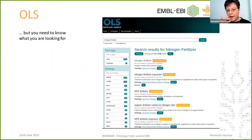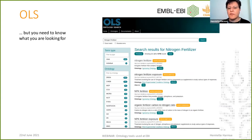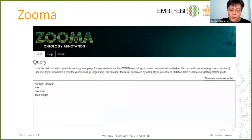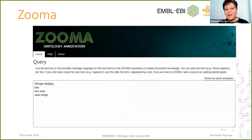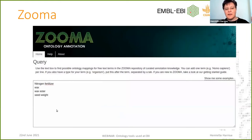When you look for something on OLS, you really need to know what you want to look at, because otherwise you can be overwhelmed by the amount of results returned. So what do you do if you're looking for a term but don't know which ontology to use? That is where our Zooma service becomes useful. The idea is: I have some text — for example, 'nitrogen fertilizer', 'wax', 'wax ester', and 'seed weight' — and I would like to map these four strings to ontology terms.